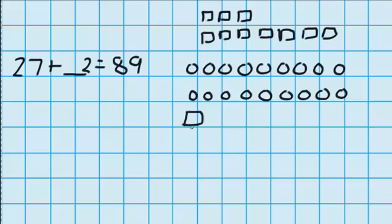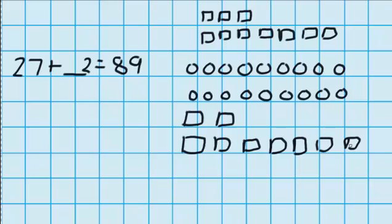Now I'm thinking about the ten dollar notes. I've got 2 ten dollar notes and I need to have 8 ten dollar notes. So I'll draw those in down below. 1, 2, 3, 4, 5, 6, 7, 8.